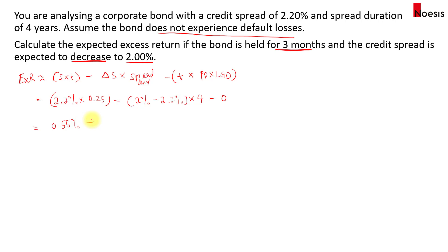For the second component, since the spread decreased, this will be negative 0.8%. So for a decrease in spreads, we expect the excess return to increase. This gives us a total of 1.35%. The excess return will be higher than just the spread itself — there will be an additional return from the decrease in spreads.